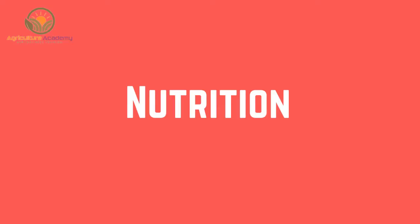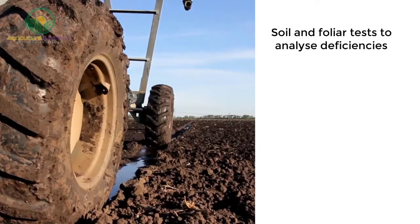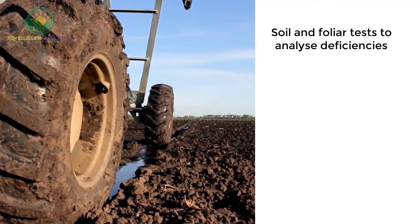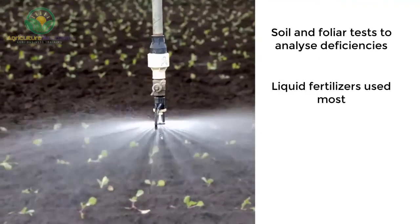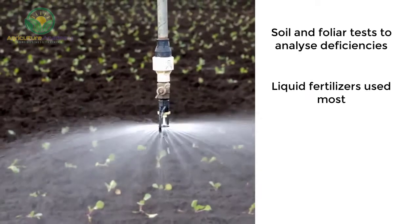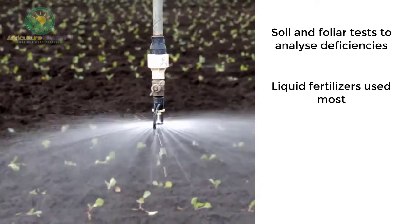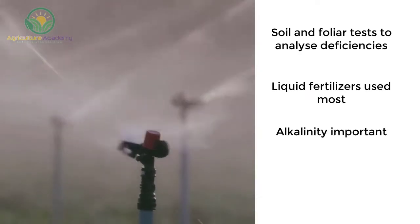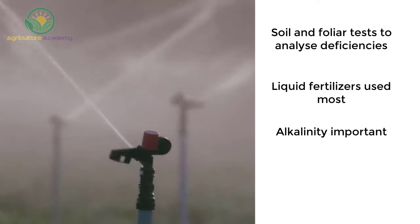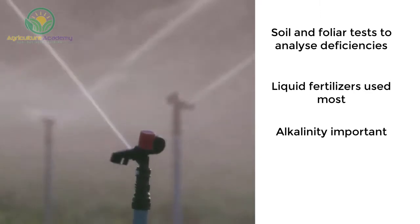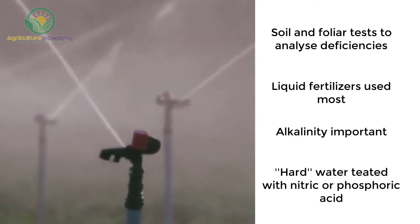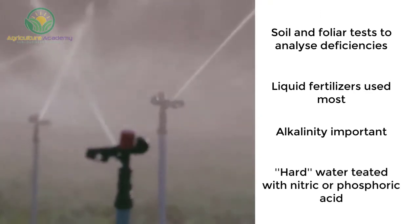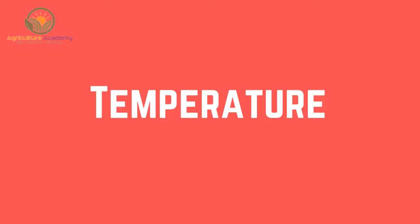Nutrition. Soil and foliar tests are used to analyze deficiencies. Liquid fertilizers are most used. The alkalinity of irrigation water is highly important. Calcium and magnesium create hard water, which should be treated with nitric or phosphoric acid.